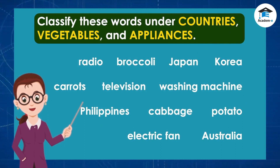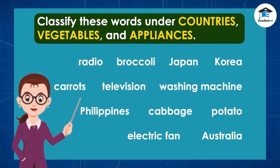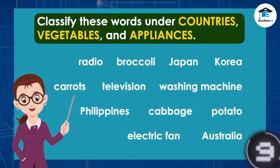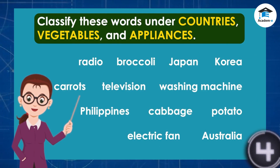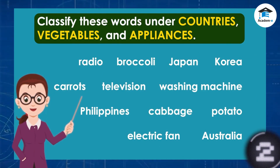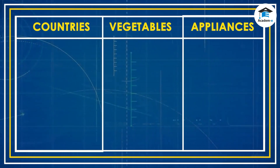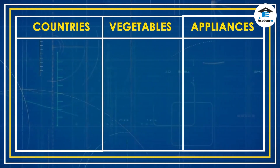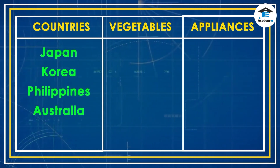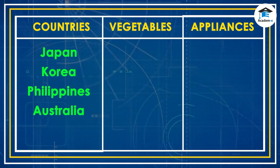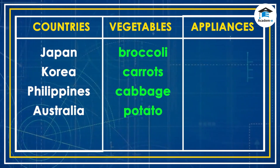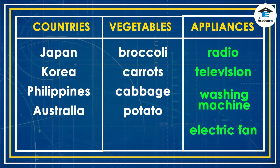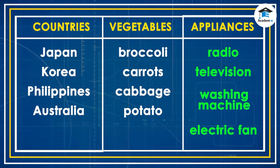Look at the following words. Classify these words under countries, vegetables, and appliances. Under the heading countries are Japan, Korea, Philippines, and Australia. Under the heading vegetables are broccoli, carrots, cabbage, and potato. Finally, under the heading appliances are radio, television, washing machine, and electric fan.